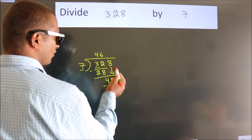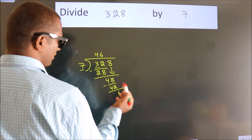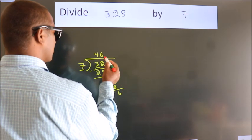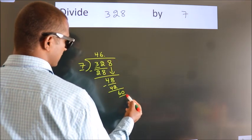After this, no more numbers to bring down. So what we do is we put a dot and take 0. So 60.